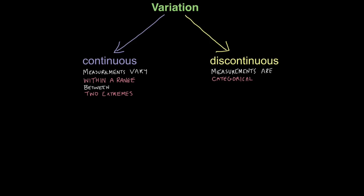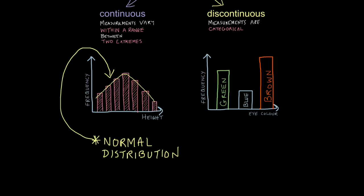With discontinuous variation, measurements are categorical or discrete. So what does that mean? So let's look at continuous variation first. In this one, we're looking at the feature of height, and here we're looking at how many people are a specific height.